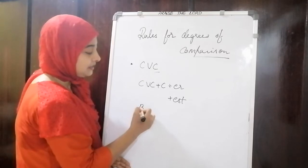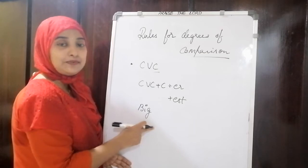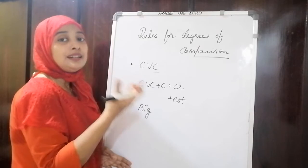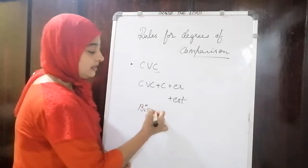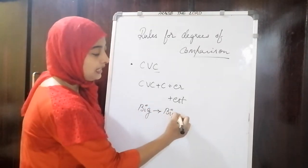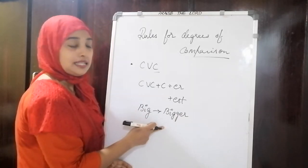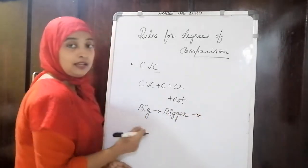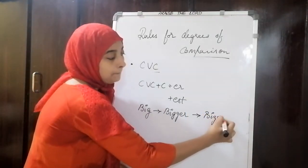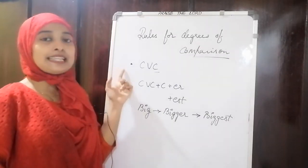For example, the word B-I-G — 'big' — is a CVC: consonant, vowel, consonant. The comparative degree is formed by doubling the consonant, giving 'bigg', then adding ER, so it becomes 'bigger'. For superlative, it becomes 'biggest'. This is the second rule.